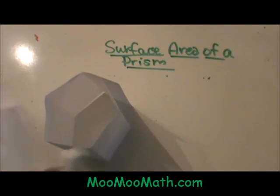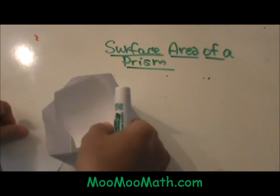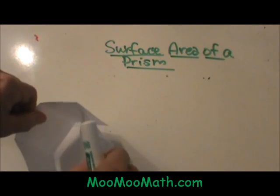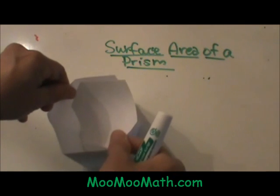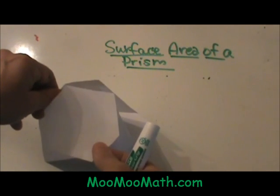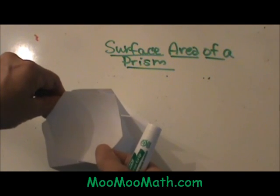I have a prism and it has two bases. This is a hexagonal prism, and I am going to take this and dissect it for you to show you what we are going to do to find the area.